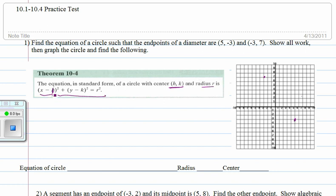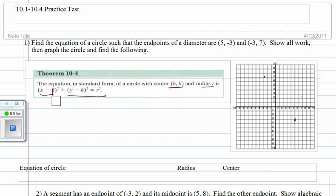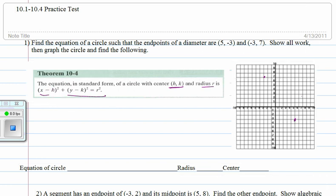We put h in here, and we put k in here, and we put r, and we square it, and that will be our equation. This comes from the Pythagorean theorem and the distance formula.